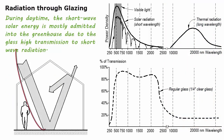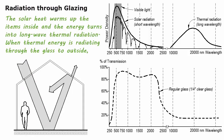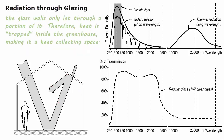During daytime, short-wave solar energy is mostly transmitted into the greenhouse due to the glass's high transmission to short-wave radiation. The solar heat warms up the items inside, and the energy turns into long-wave thermal radiation. When thermal energy radiates through the glass to the outside, the glass only lets through a portion of it. Therefore, heat is trapped inside the greenhouse, making it a heat-collecting space.